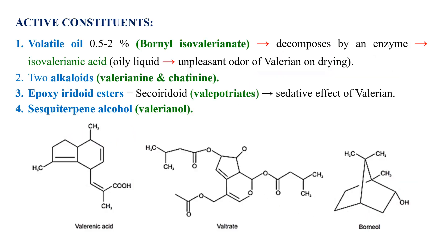Regarding active constituents in valerian, the first class is volatile oil, present at 0.5 to 2 percent. The major active constituent in the volatile oil is bornyl isovalerate. When the valerian root or rhizome is dried, this compound decomposes by the action of enzymes inside the root to form isovalerianic acid, which is an oily liquid responsible for the unpleasant, disagreeable odor of dried valerian. Fresh valerian root does not have an unpleasant odor.